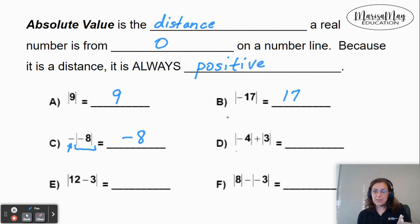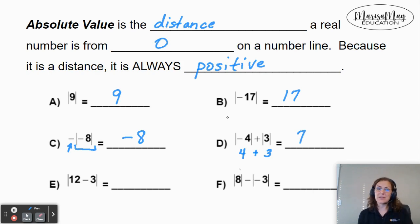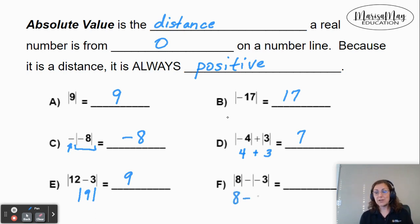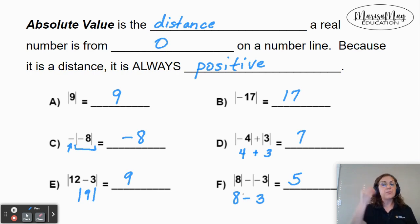For D, we want the absolute value of negative 4, which would be 4, and then add it to the absolute value of 3, which would be 3. So we add those and get 7 — but notice I had to do the absolute values first. E is a little different: E wants us to do the subtraction first. 12 minus 3 gives me 9, so I'm asking the absolute value of 9 — how far is 9 from zero? That would be 9. For F, we do the absolute values first: the absolute value of 8 is 8, and the absolute value of negative 3 is positive 3. Then we subtract to give us 5. D, E, and F are good examples of when we do the absolute value first versus when we do the subtraction or addition inside before taking the absolute value.